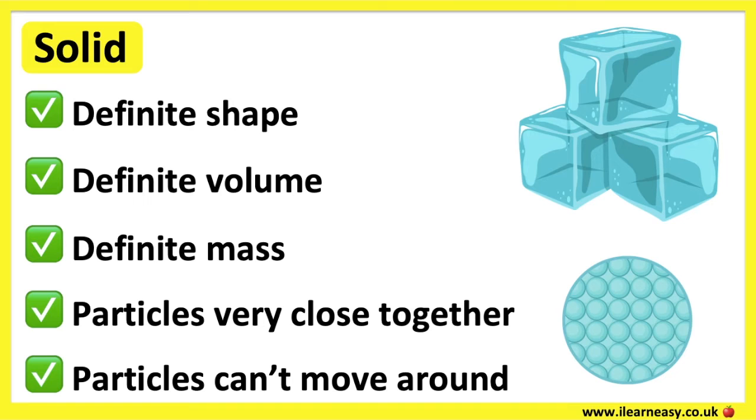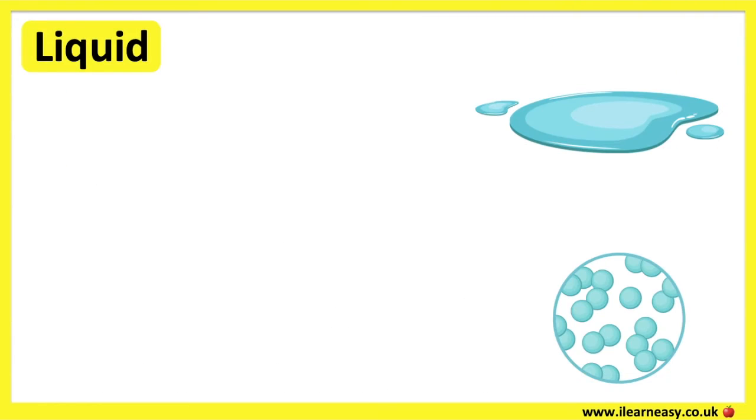The shape of a solid doesn't change unless it's broken, cut, or squashed into a different shape. Examples of solids are a table, a chair, and a pan.